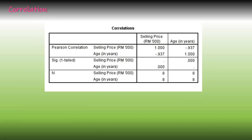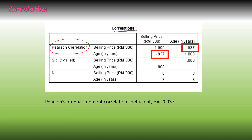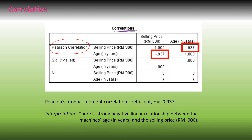Next is the correlation output. From this output, you can identify the strength of the relationship between the two variables using Pearson's correlation value. Based on this example, the value obtained is negative 0.937 — that is the Pearson's product moment correlation coefficient value. There exists a strong negative linear relationship between the two variables.